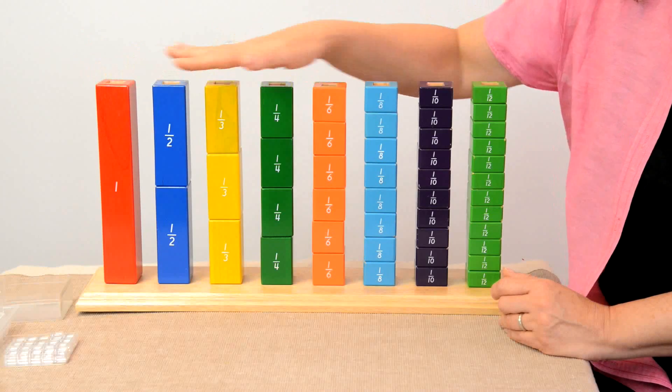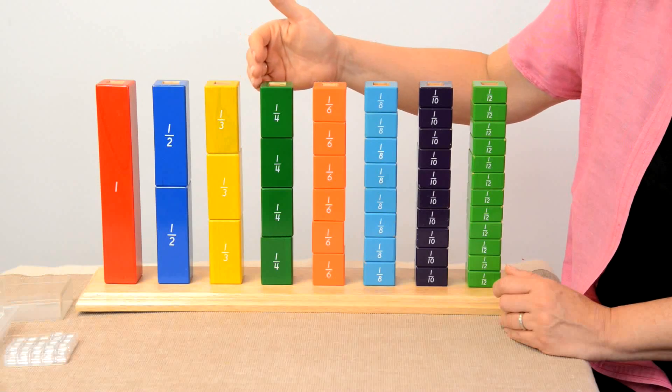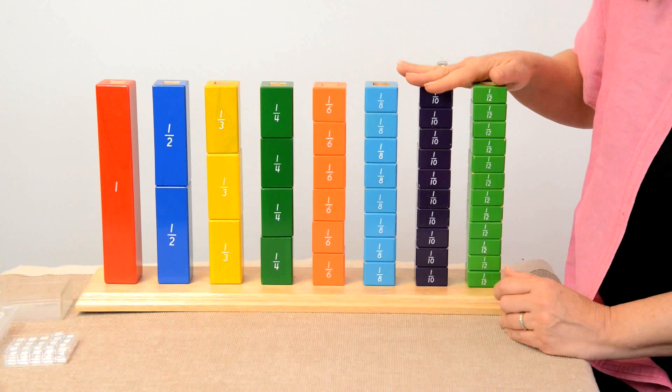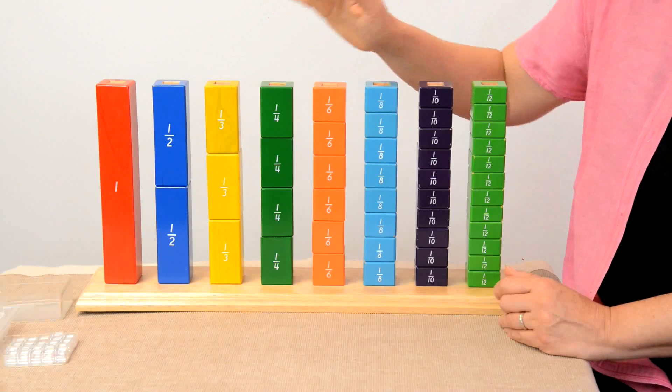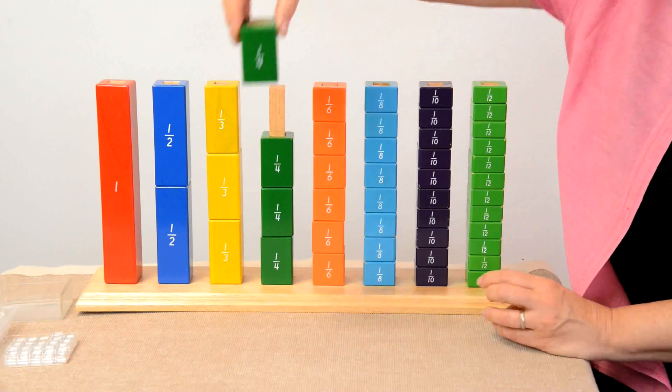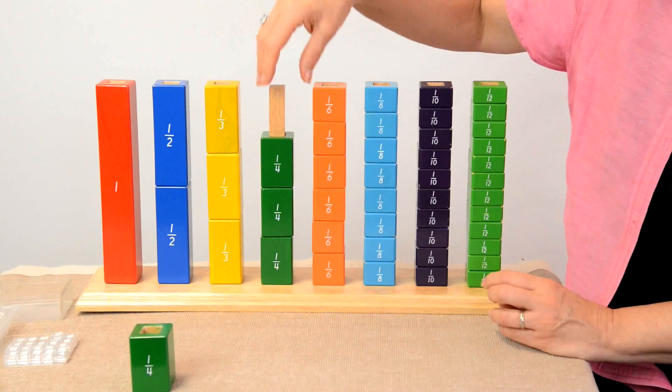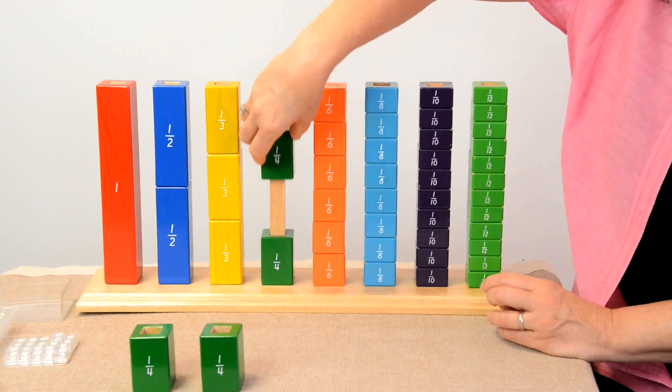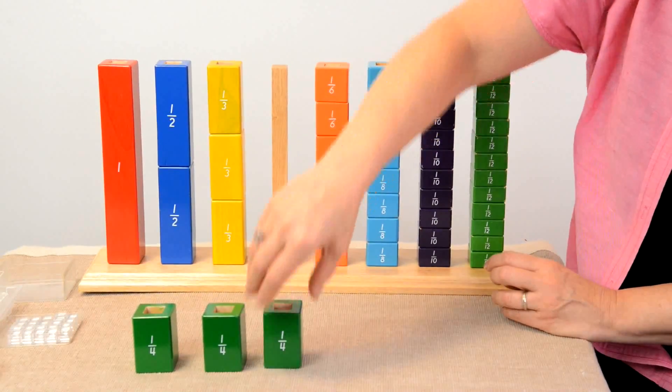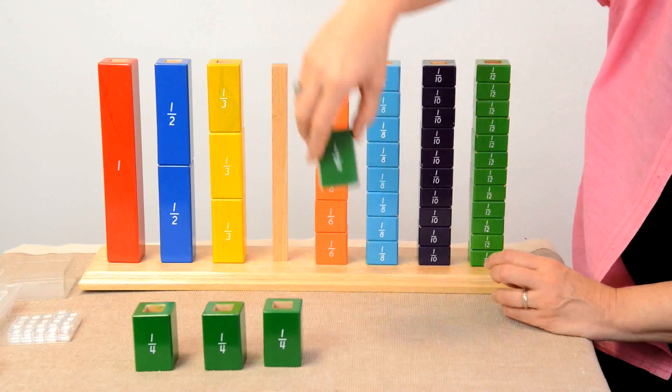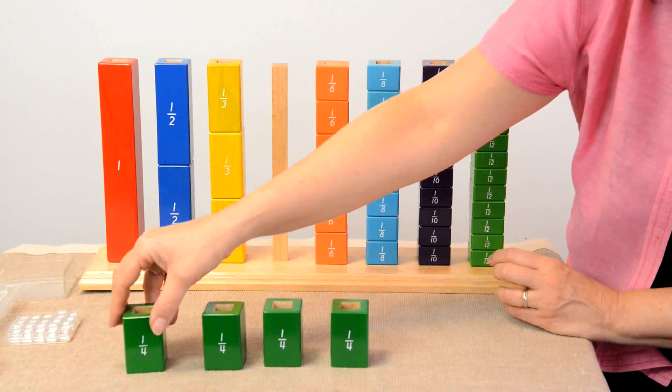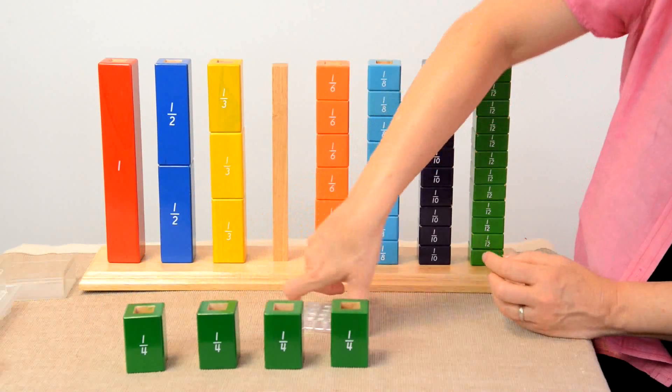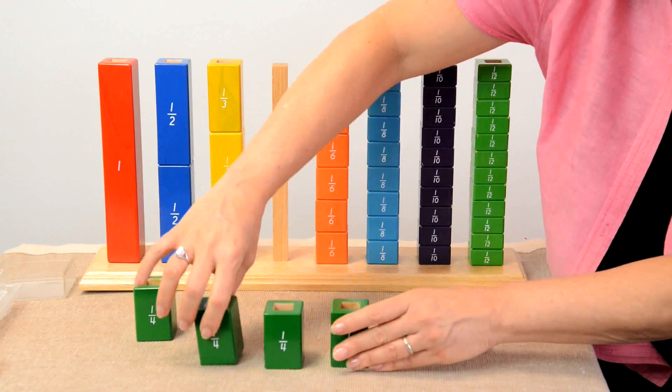I would not use this as the only material because it makes it seem like there's no such thing as one-fifth or one-seventh, which is not something we want the children to think. The reason I'm showing this is because of the way that I use it to demonstrate that that is not the only thing that fractions are. Fractions are not just pies and pizzas. Fractions are parts of sets and they are a subset of division. If you are working with fractions, you are working with division.